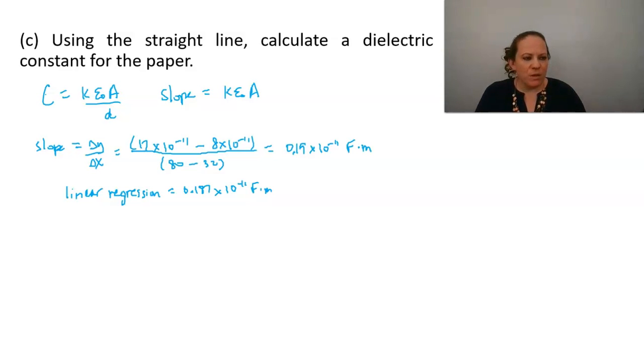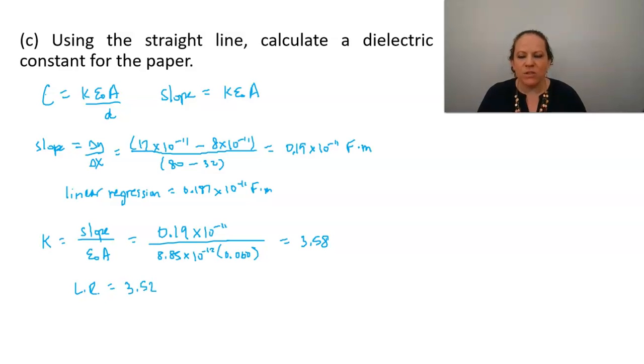So yeah, back to that slope equals kappa epsilon not a, so kappa should be our slope divided by epsilon not a, so I will take that value of the slope and 8.85 times 10 to the minus 12 times that 0.060 square meters for the area and I got a value of 3.58 for the dielectric constant of the paper and if you used a linear regression then you would the value of the slope from the linear regression you'll get 3.52.